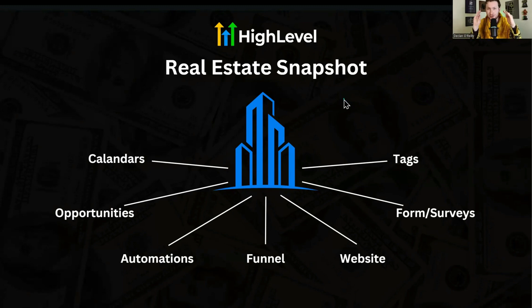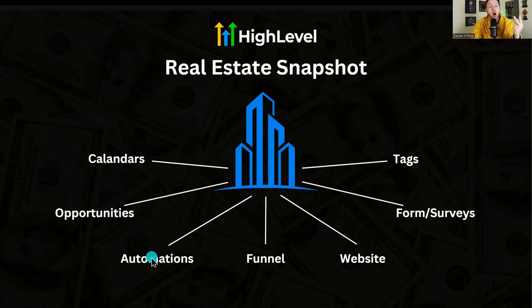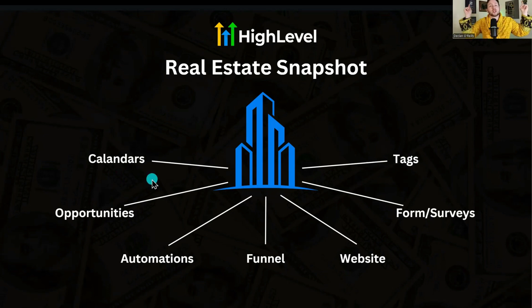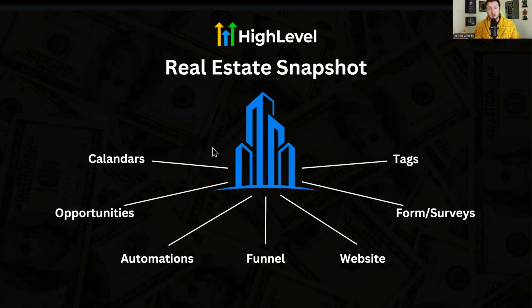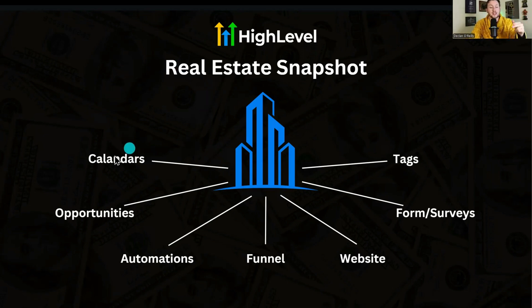I want to show you what's in this snapshot — I'm so excited for you to use this because it's going to crush it whether you're a real estate agent or selling to real estate agents. You'll have pre-made calendars, pipelines, tons of automations, a funnel, a website, forms, surveys, and pre-built tags. When I say 100% free, I mean you can get it down below without signing up with my affiliate link. If you do want to learn more about High Level or access my community, there is a 30-day free trial link below that includes access to me, a private community, coaching, and courses. But this snapshot is standalone and completely free.